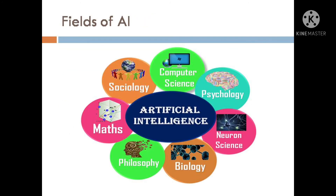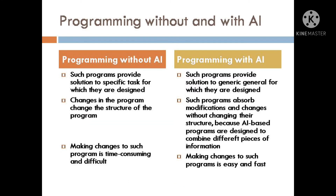The field of Artificial Intelligence combines different disciplines for creating systems capable of copying human intelligence. These disciplines include computer science, psychology, neuroscience, biology, philosophy, maths, sociology, etc. We can also differentiate between two kinds of programming: programming with Artificial Intelligence and without Artificial Intelligence.